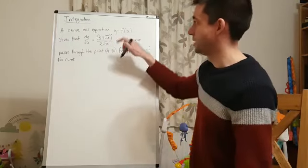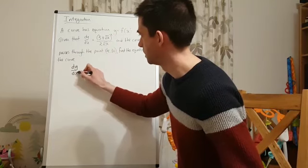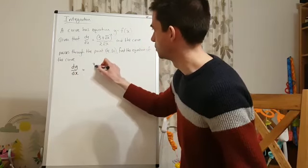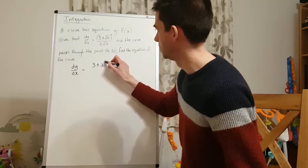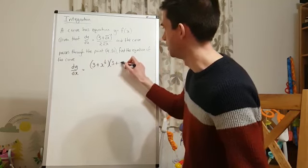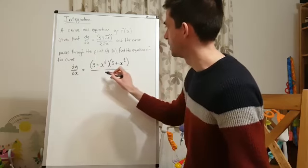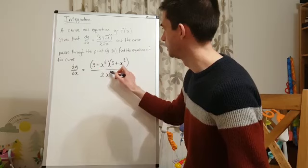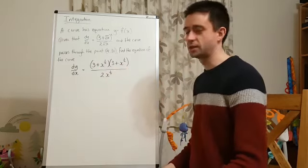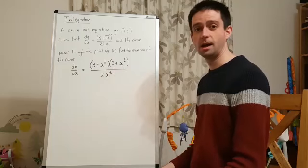Now, this squared on the bracket means, because I'm not being lazy, I'm going to write that bracket out twice and expand it to get three terms on the numerator. Now, notice that what I'm doing, I'm not writing root x, I'm writing 2x to the power of a half, because that's going to make it easier for me to simplify my expression.